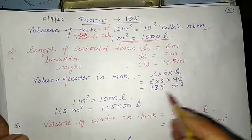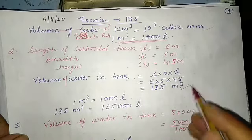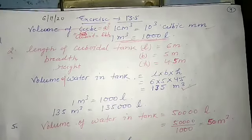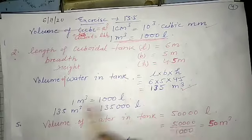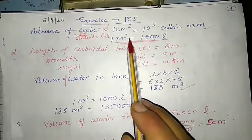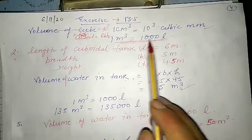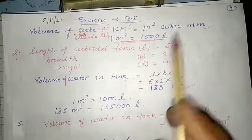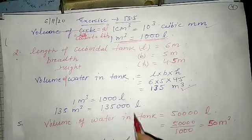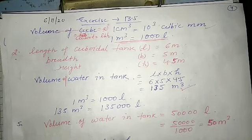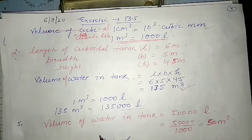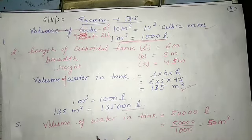Multiplying gives us 135 meter cube. Since 1 meter cube equals 1000 liters, we multiply 135 by 1000 to get 135,000 liters. This is the required capacity of the cuboidal water tank.